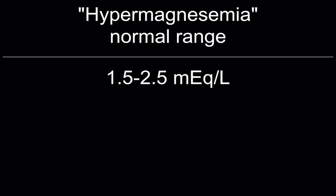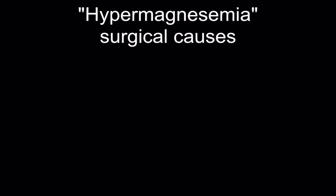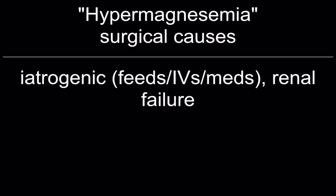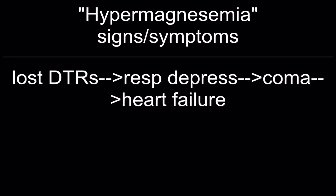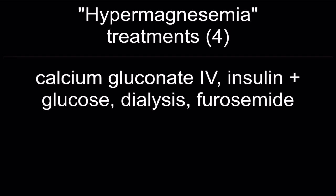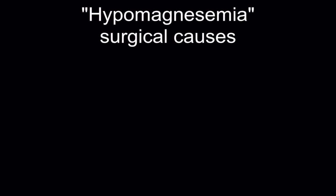Normal magnesium range: 1.5 to 2.5 milliequivalents per liter. Surgical causes of hypermagnesemia: iatrogenic — feeds, IVs, meds — and renal failure. Signs and symptoms: loss of deep tendon reflexes. Treatments: calcium gluconate IV, insulin plus glucose, dialysis, and furosemide.